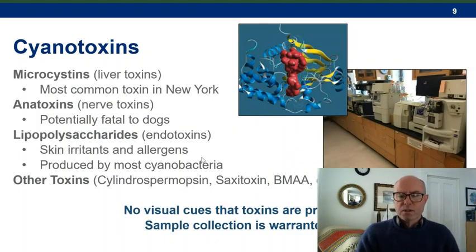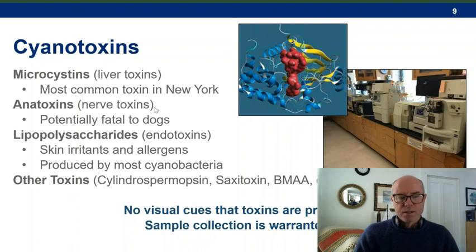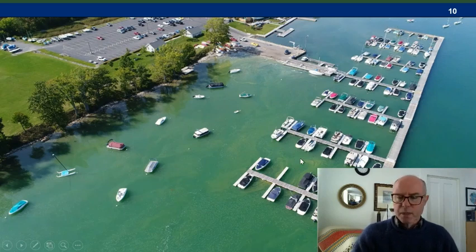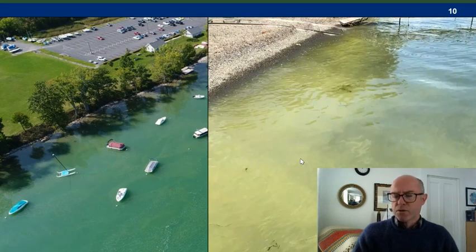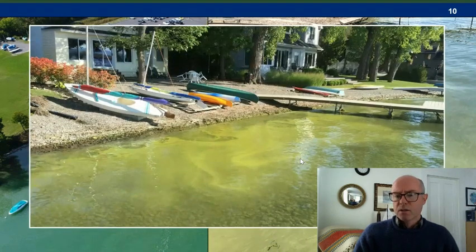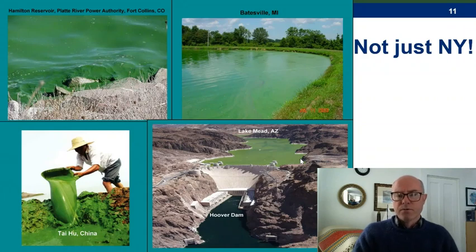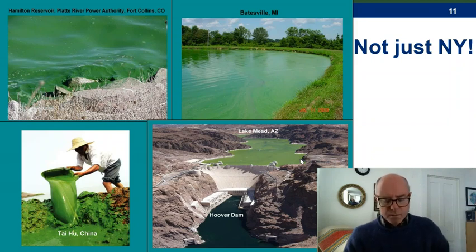Regarding toxins, anatoxin was first known as the 'very fast death factor' — these are highly potent toxins and the reason we don't want harmful algal blooms near recreational areas. A bloom viewed from a drone shows generally green water with brighter green patches. Up close there are streaks, and closer still there are filaments — often congregated around beaches where they've drifted by gentle breezes. This is not just a New York problem; blooms are found across the US and internationally, particularly in Lake Taihu in China.